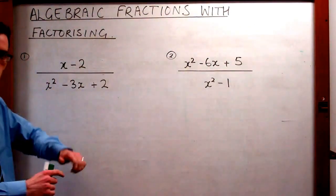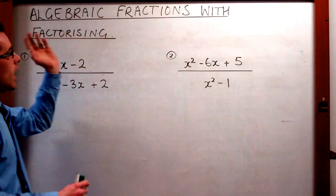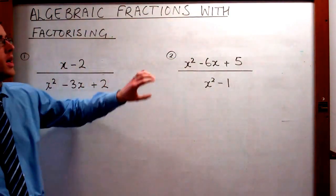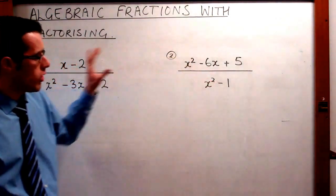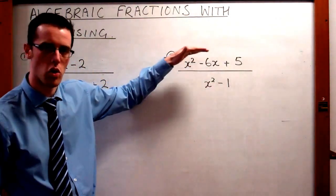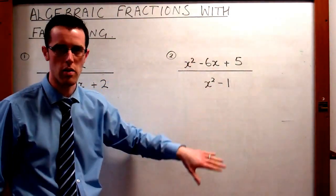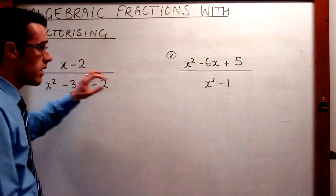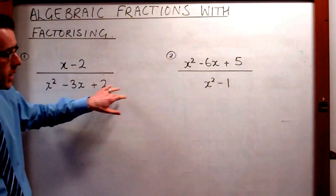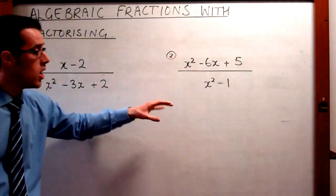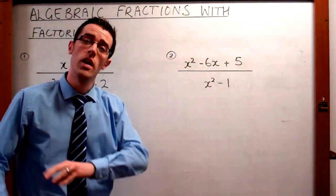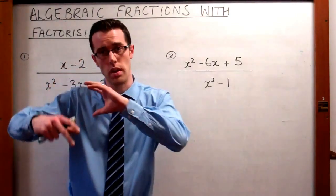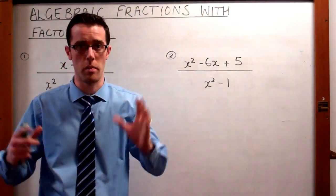Hello everyone, welcome to this video on algebraic fractions with factorising. In these examples, it doesn't look like straight away that there's the same terms in the top line and the bottom line that you can immediately cancel. So what we're going to have to do is we're going to have to factorise either the top or the bottom line — the numerator and the denominator, or sometimes both — and then we'll see that there are terms that are the same that we can cancel to simplify the fraction.